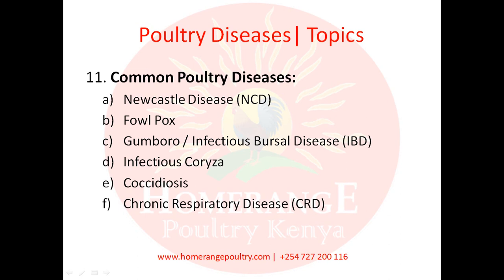For each of these six common diseases, we'll be able to identify them by name, know what type of disease it is, what the three main symptoms are, how it is spread, how you prevent it, and most importantly, how you treat it. The diseases covered are: Newcastle disease, Fowlpox, Gumboro, Infectious Coryza, Coccidiosis, and Chronic Respiratory Disease.